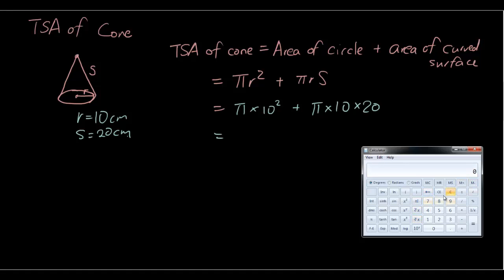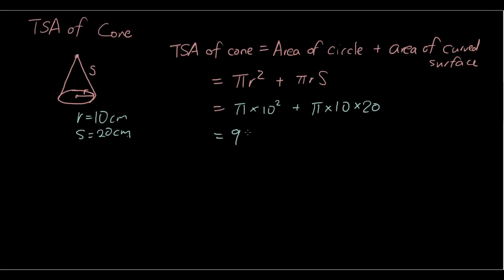So we have π times 10 times 10 plus π times 10 times 20, and that equals 942.5. So 942.5 centimeters squared rounded to one decimal place. So that is the total area of a cone.